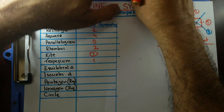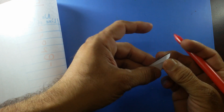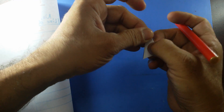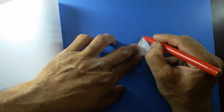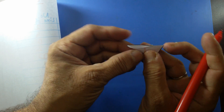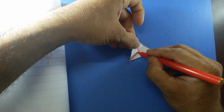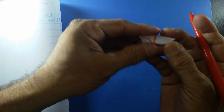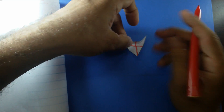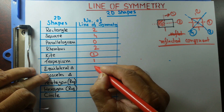Equilateral triangle — as you know, all sides are equal and all angles are equal. I fold it and I have two congruent shapes reflected through this line, so this is one line of symmetry. I can do the same from this vertex — yes, another line of symmetry. And then fold it through this vertex — another line of symmetry. So the equilateral triangle has three lines of symmetry.